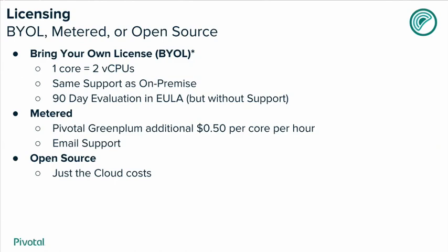Metered is an hourly-based billing — you don't need a subscription license; you just pay 50 cents per core per hour for all cores deployed. That's per core, not per vCPU, so it's like 25 cents per vCPU. Support is through email. And last but not least, you can always run the open source version, paying only for the cloud infrastructure cost.